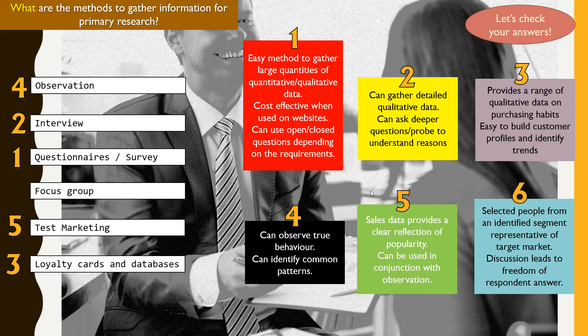Method number five is test marketing. Test marketing is basically selling a set of products just for test purposes, to see how sales rise and how people react to a particular product. It's not done on a large scale — normally on a smaller scale — just to observe people's buying behavior on a product you're trying to launch. Sales data can give you a clear reflection of the popularity of your product, and you need to use this in conjunction with observation to understand what motivates people to buy.